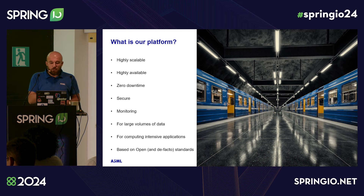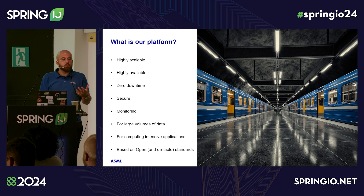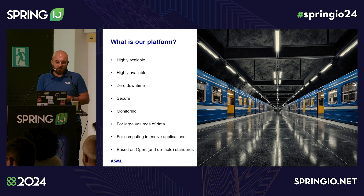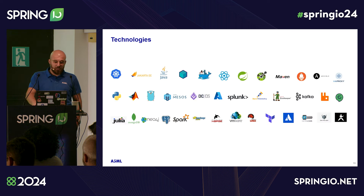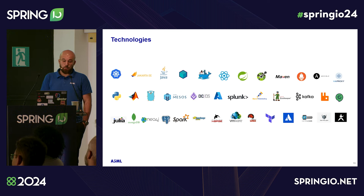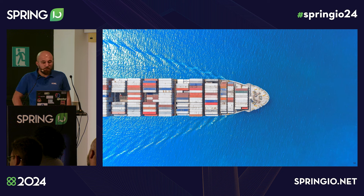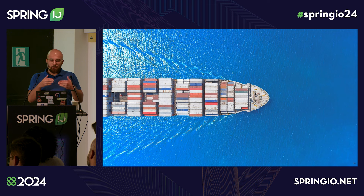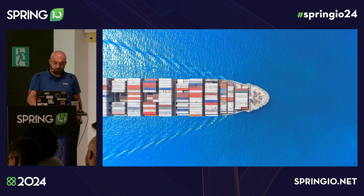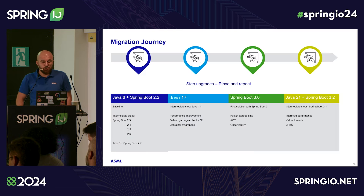Our platform is highly scalable — scaled appropriately depending on the fab context and the amount of data we process. It has to be highly available with zero downtime, resilient, and support rolling upgrades. It must be secure with no vulnerabilities, enforcing access control and secure data transfer. It is designed for large volumes of data and compute-intensive applications, based on open and de facto standards, relying on CNCF projects as much as possible. We deal with hundreds of containerized, interconnected services, a good percentage of which are developed in Java.